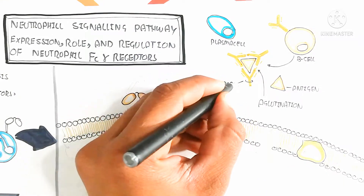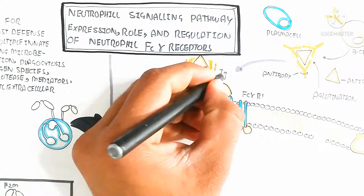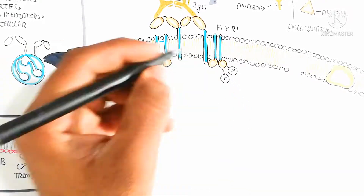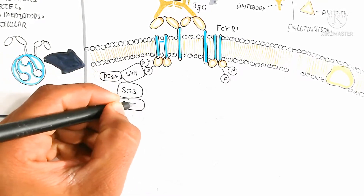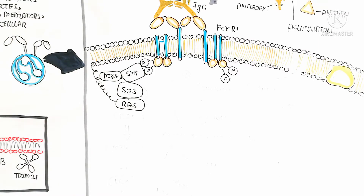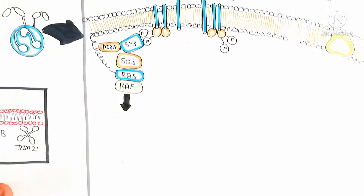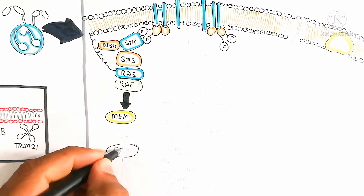The opsonized antigen contains agglutinated antibodies, which are recognized by the Fc portion of IgG — the major immunoglobulin. After FcγRI binding and phosphorylation of its intracellular domain, SYK is activated, followed by PI3-kinase and son of sevenless (SOS) protein. RAS is then activated, converting from GDP to GTP form, which in turn activates RAF.